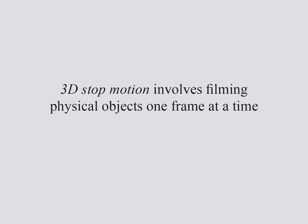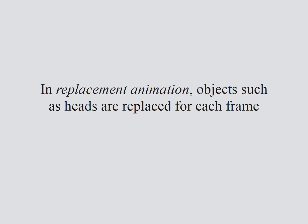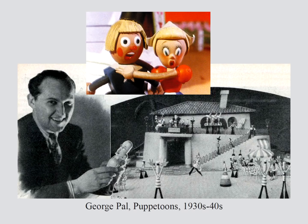Of all the forms of traditional animation, perhaps the most time-consuming and certainly the most realistic is 3D stop-motion, where you have physical objects — usually models — that you pose and animate on each frame. An early form is replacement animation, where you have multiple versions of an object like a character's head, and on each frame you simply replace that head to get a different expression. This method was pioneered by George Pal in a series of cartoons called Puppetoons.